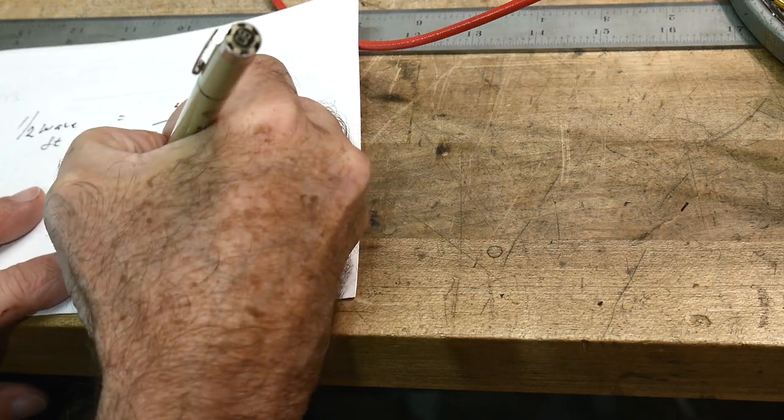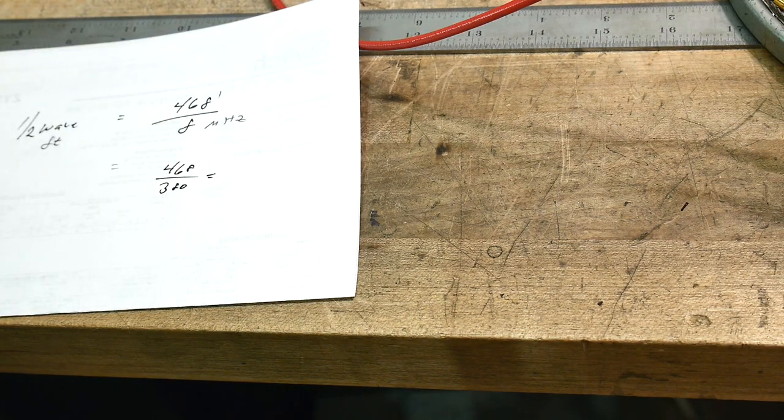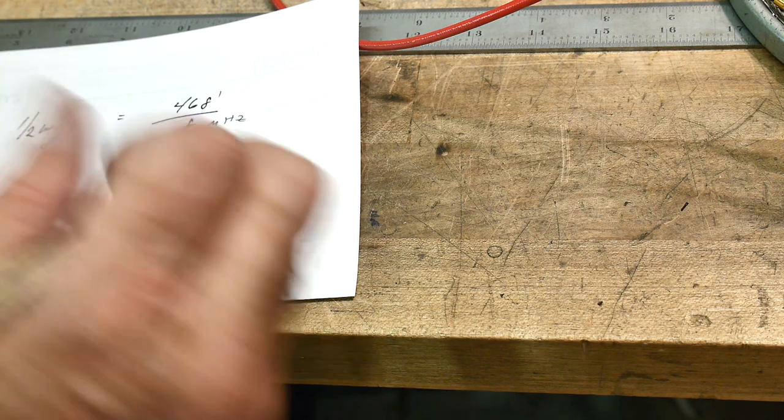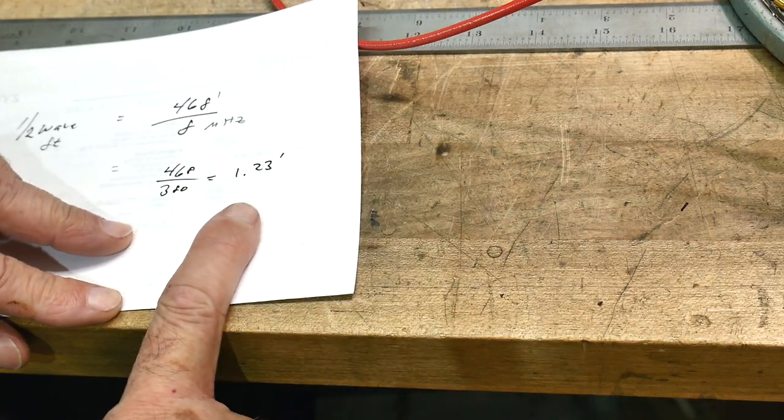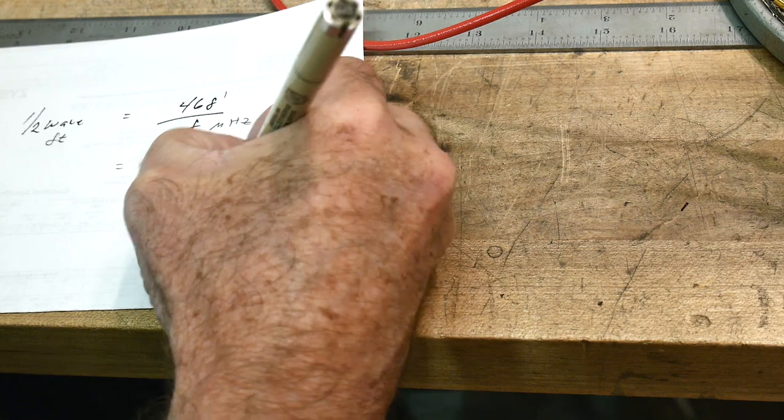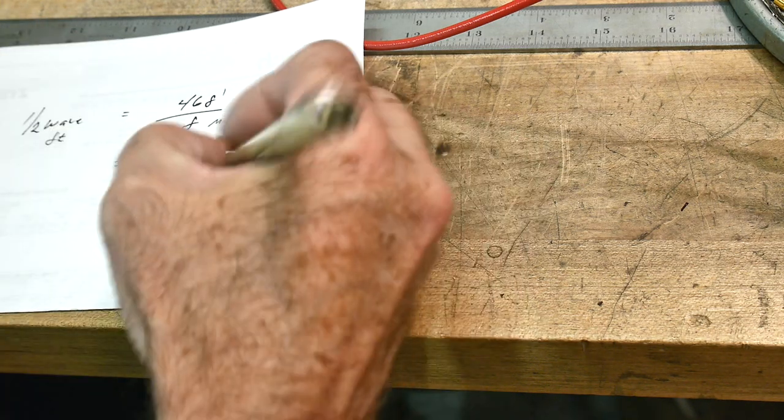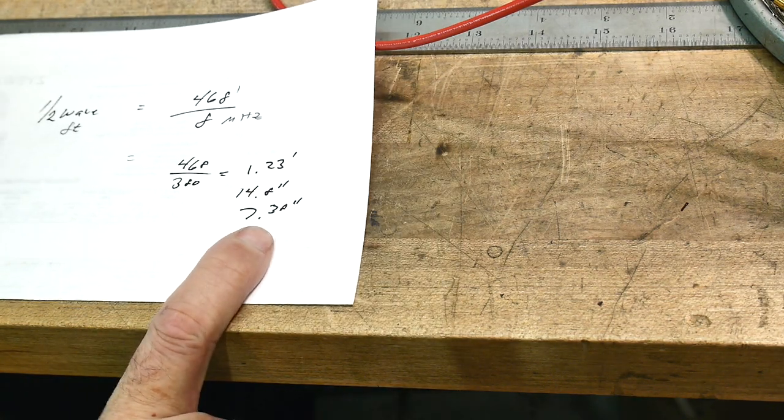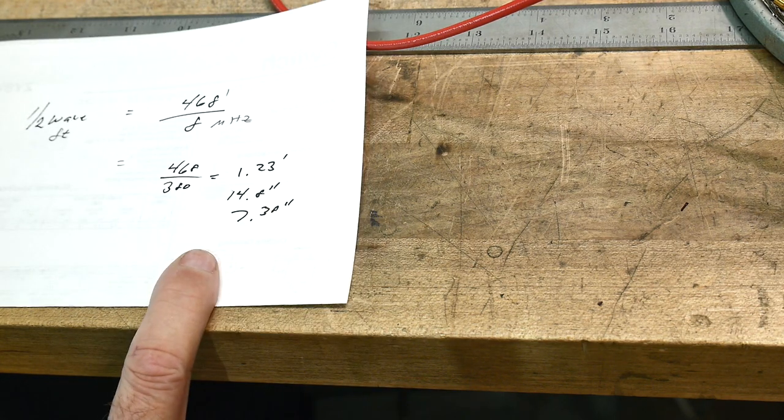So we have 380 megahertz. We have 468 and we'll get out a calculator. And so 468 divided by 380 and that says it's 1.23 feet. Okay. And so let's convert that to inches. That is 14.8 inches. And that means that each half is 7.38 inches. Now we're averaging about three and a quarter inches on one side and three and a half inches on the other side. So yeah, kind of evened out to that. But let's be a little bit more exact.